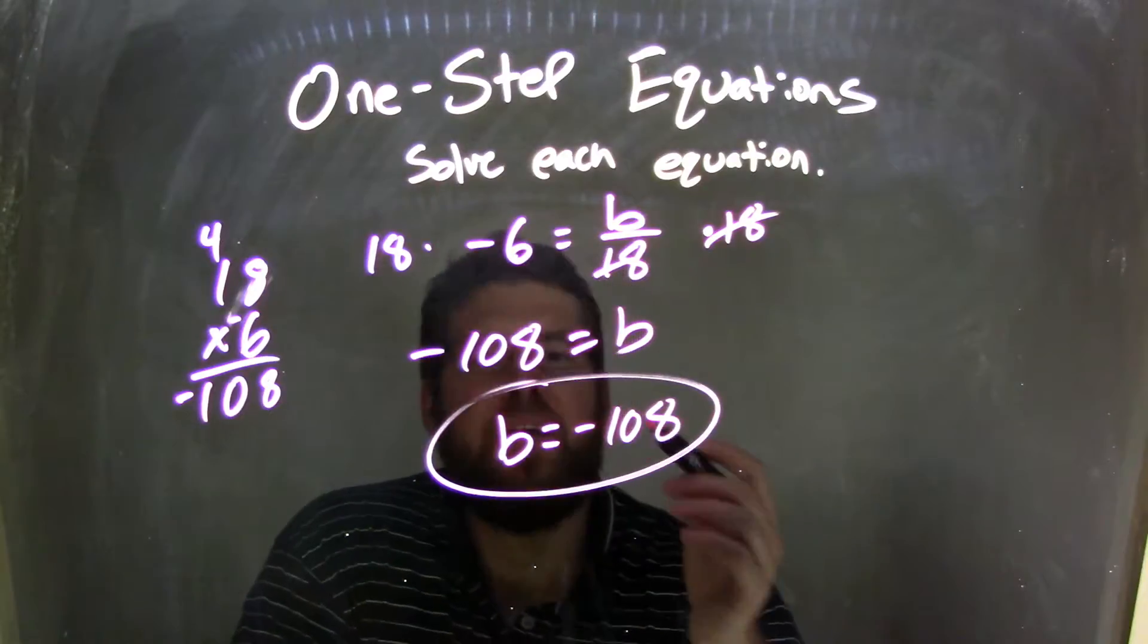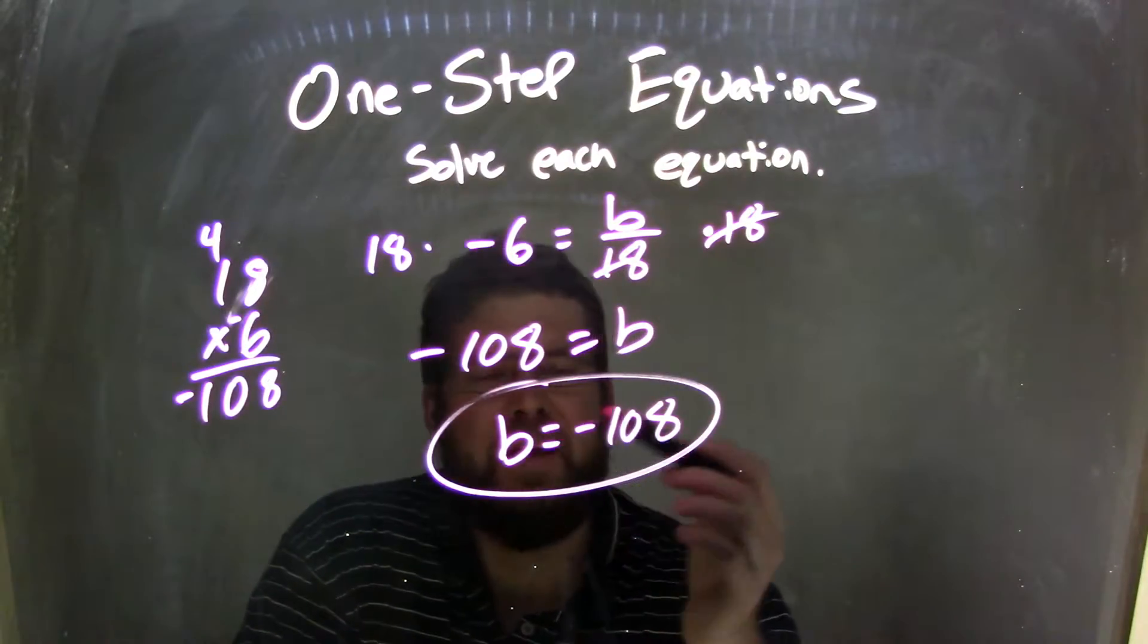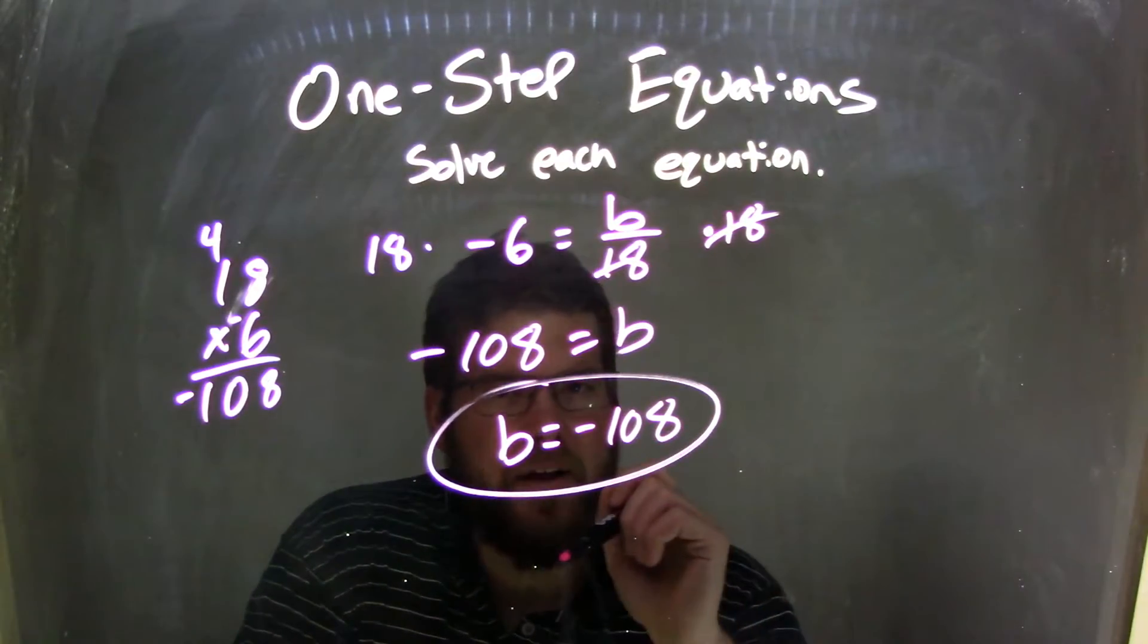Rearranged, I wrote it again to be nice, and so I have b first, so b equals negative 108, which is my final answer.